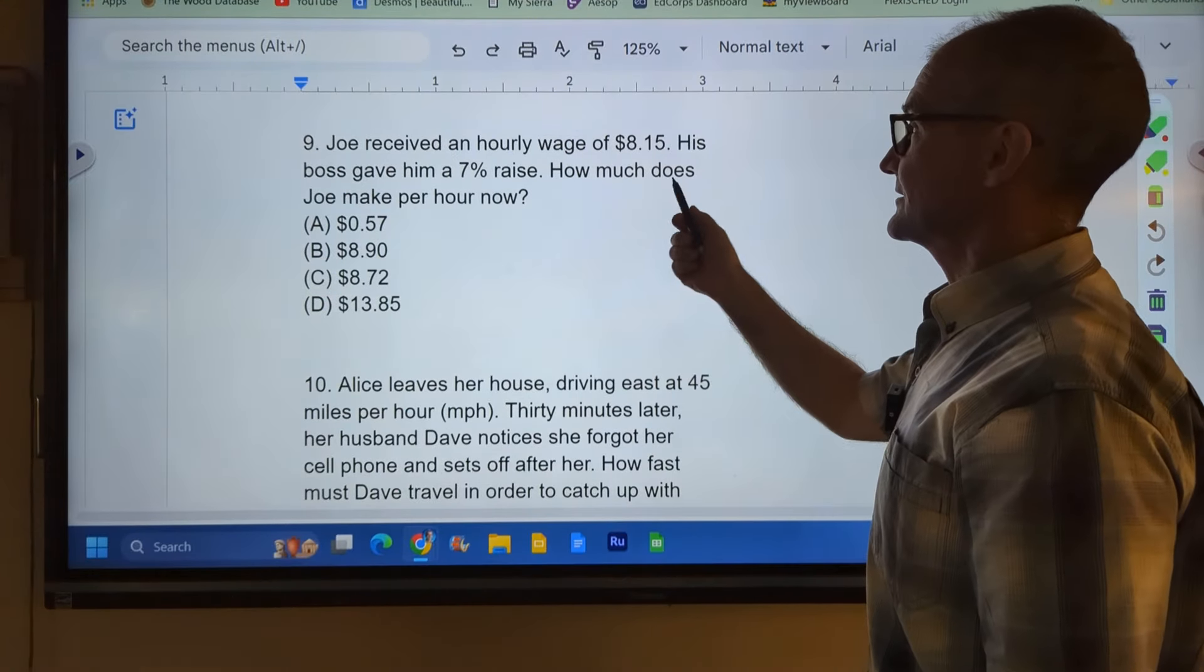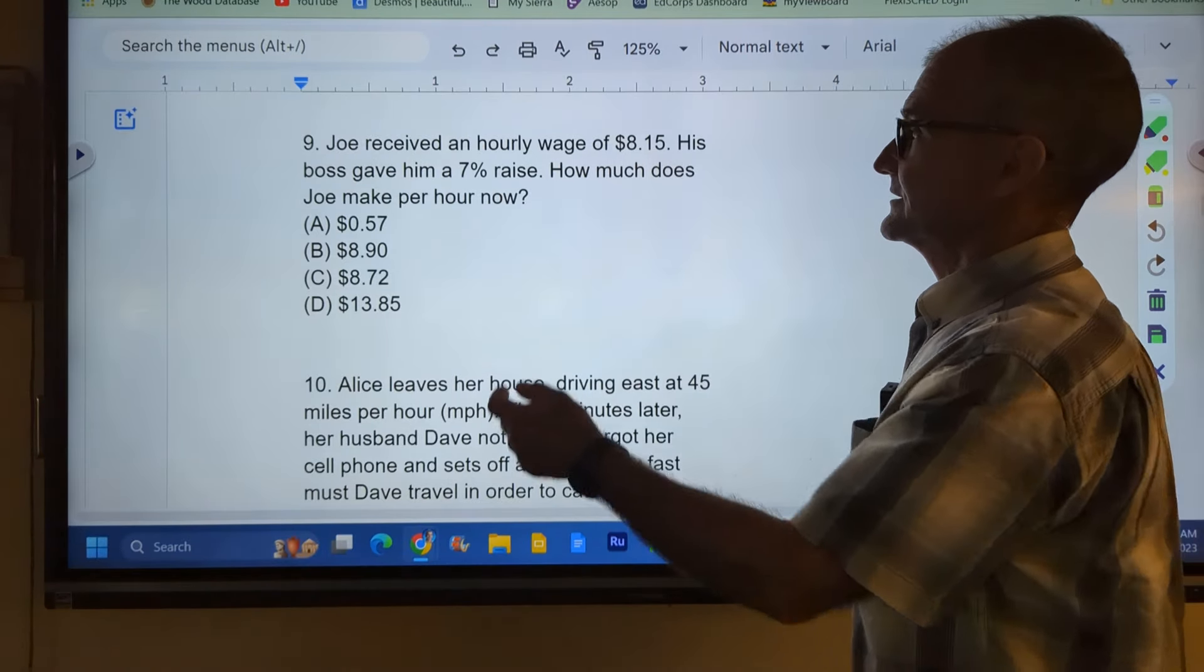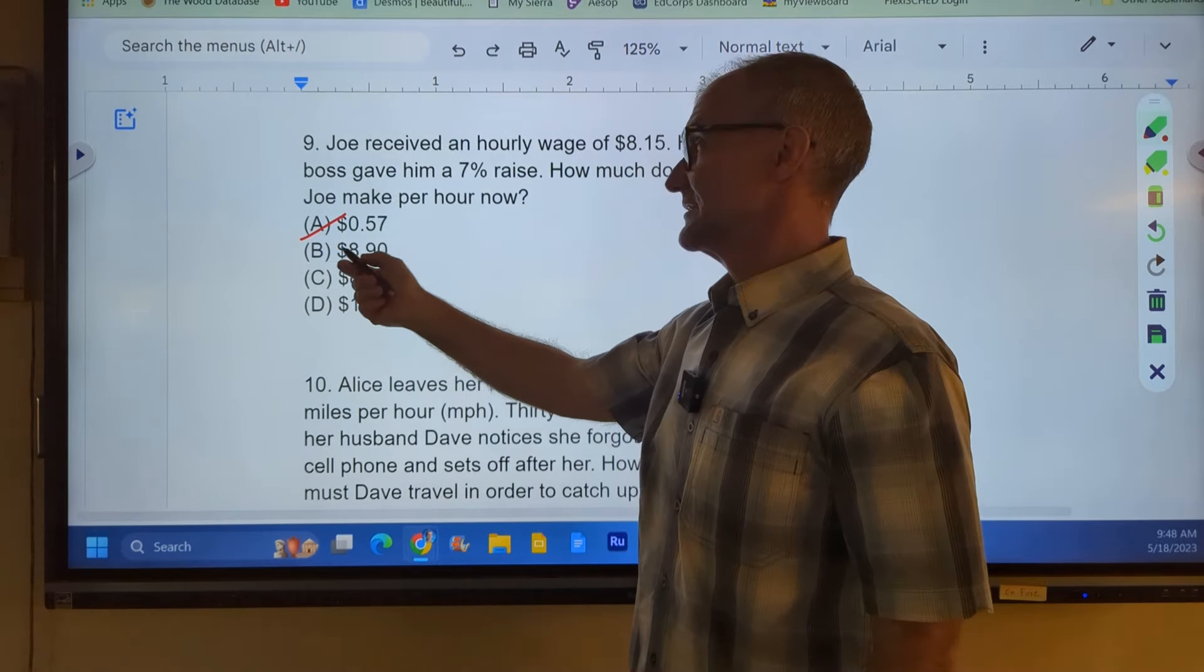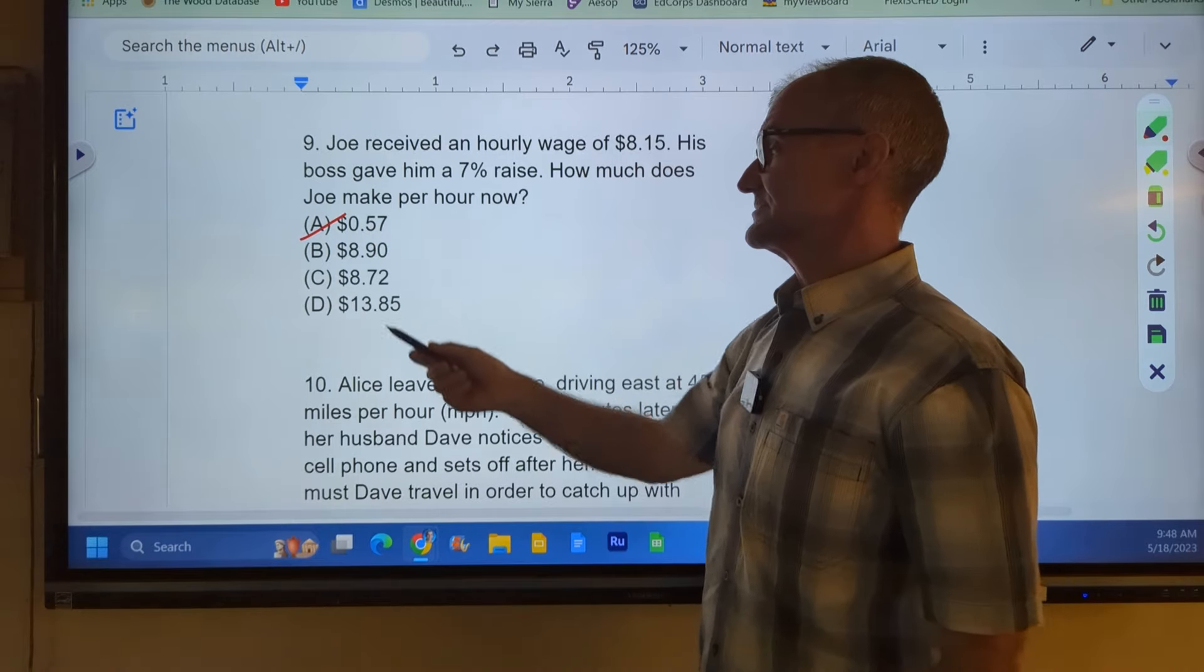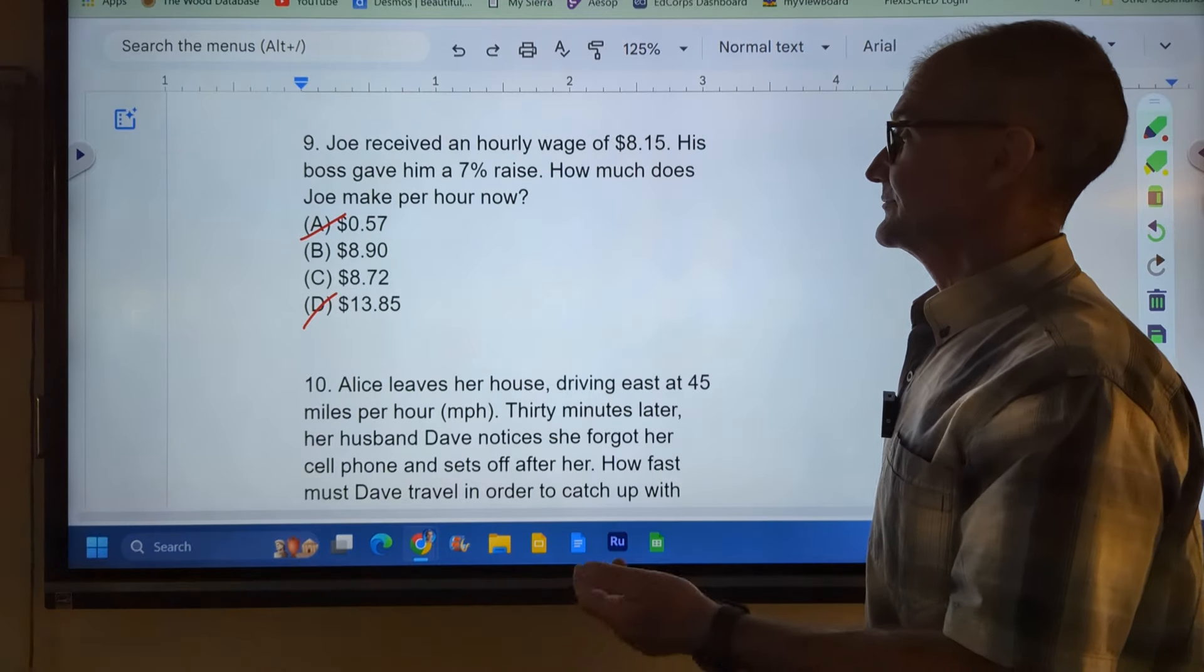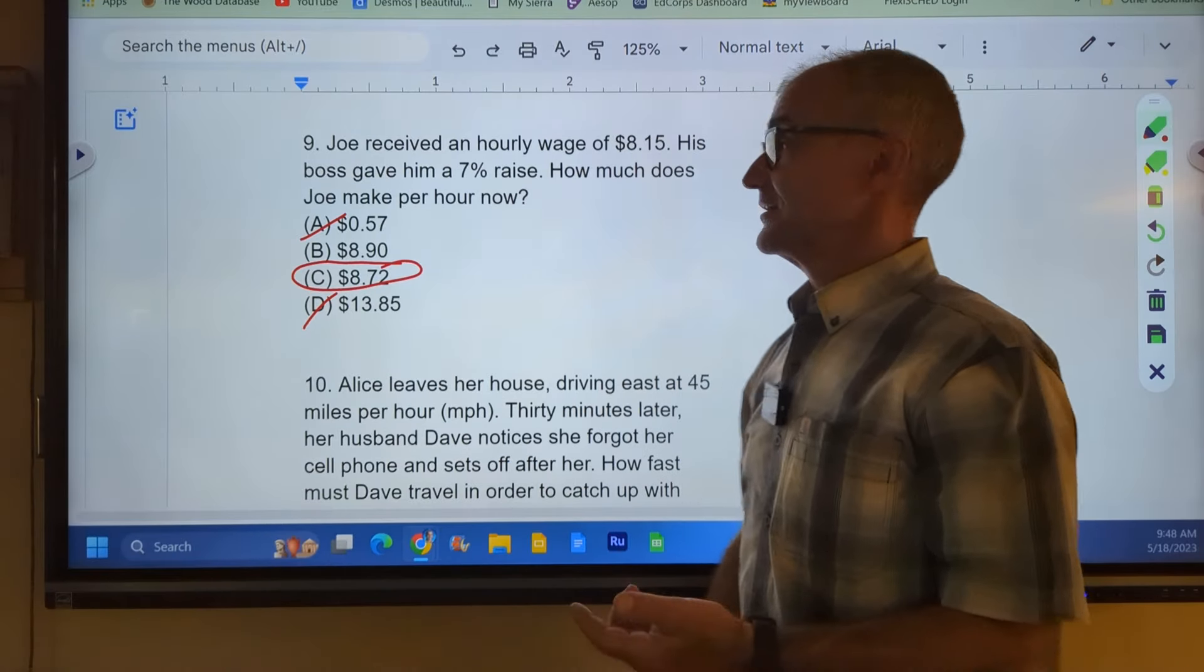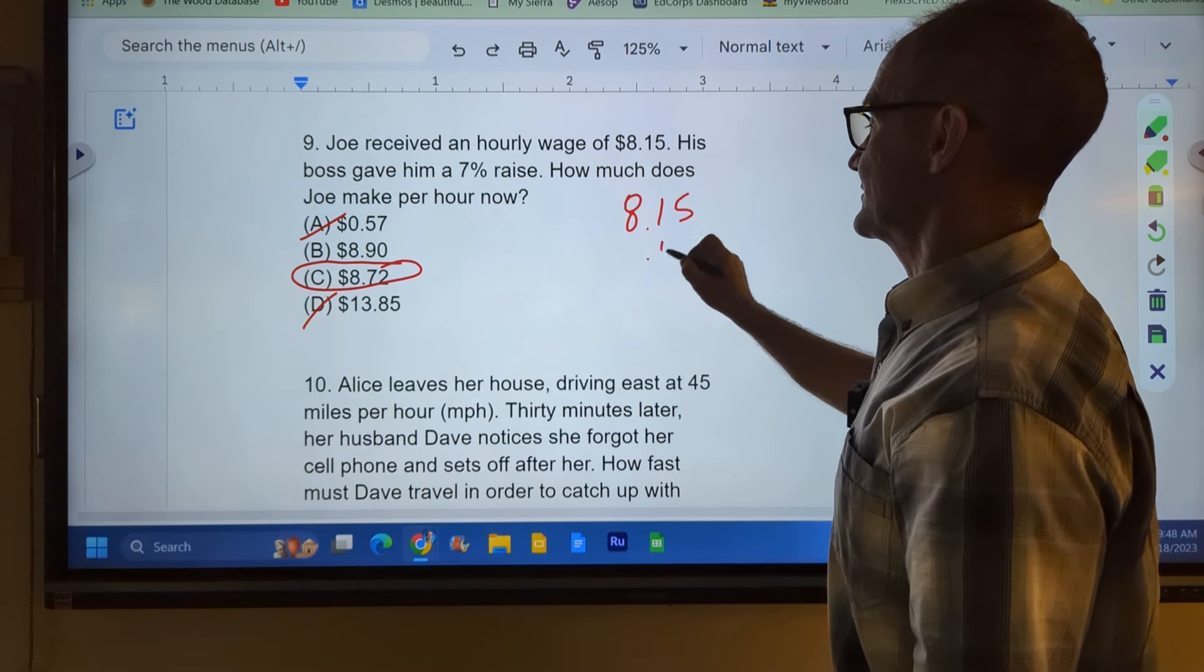Number nine, Joe received an hourly wage of $8.15. His boss gave him a 7% raise. How much does he make per hour now? Well, he's got to make more than $8.15, 7% more, so that doesn't make any sense. That's really a reading comprehension. That's probably 7 cents times that. That's probably that. So that's how much his wage goes up. $13.85, that doesn't make any sense. So I've got to pick between these two. I could multiply it out, or I could just go 57 and 15. That's going to give me $8.72. It's going to be this answer right here.